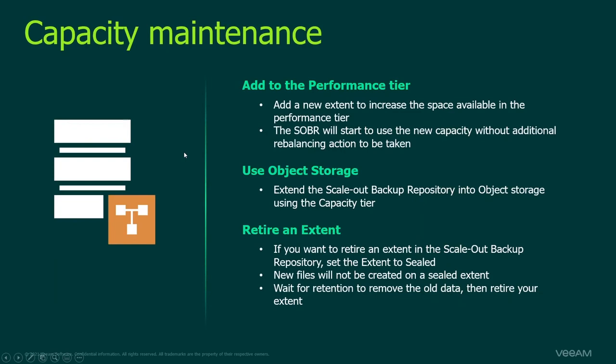Another advantage of the scale-out backup repository is that we can add extents as we grow. With each new extent you increase the space available in the performance tier. When you add a new extent, we automatically start using that new capacity without additional rebalancing of existing data. If your extents are running quite full, just add an extra extent and new jobs start going to the new one.